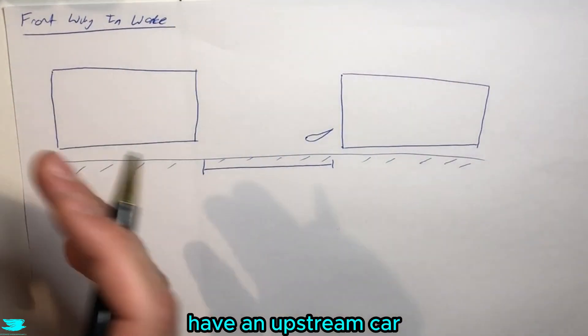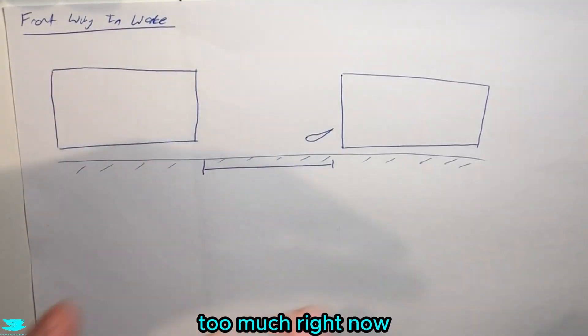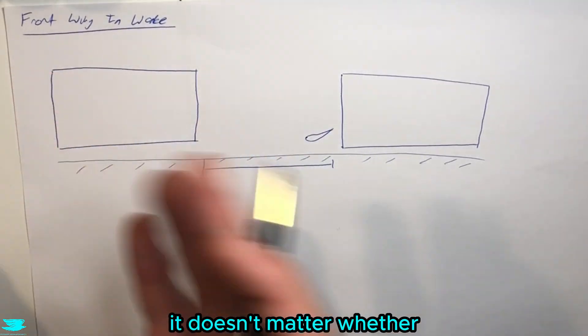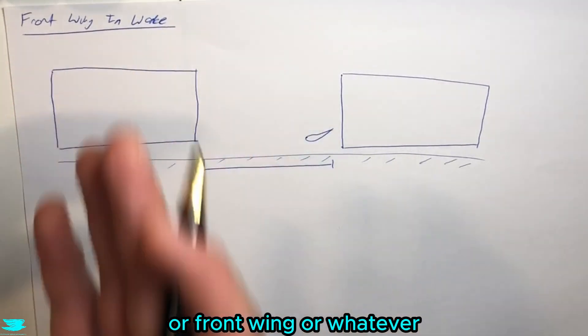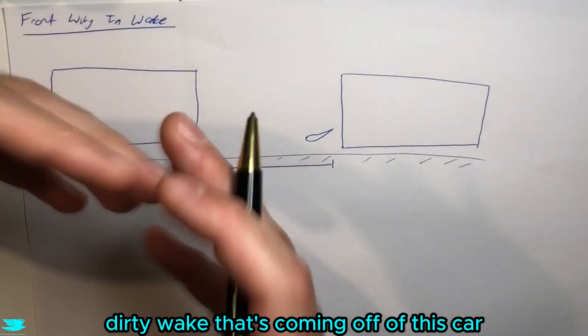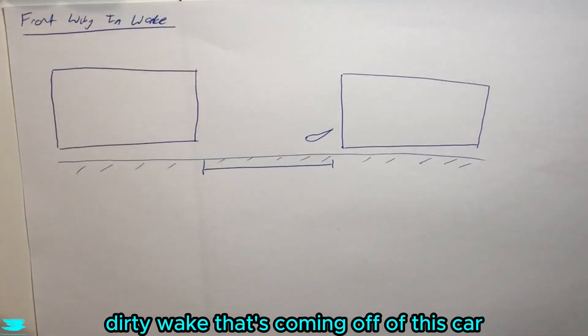So first of all, let's say we have an upstream car and it doesn't really matter too much right now what its setup is, whether it has a diffuser or front wing or whatever. Let's just say it's a car with a regular dirty wake coming off of it.